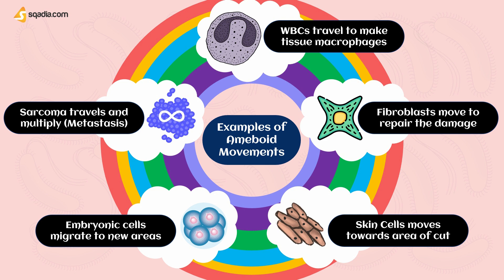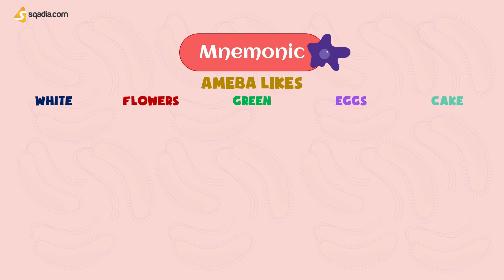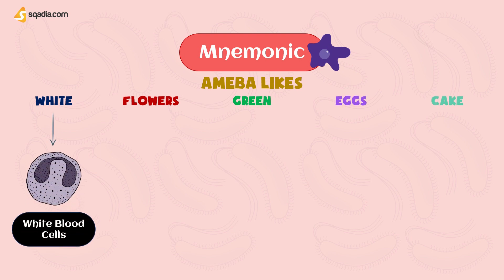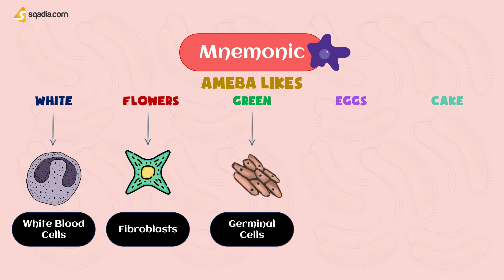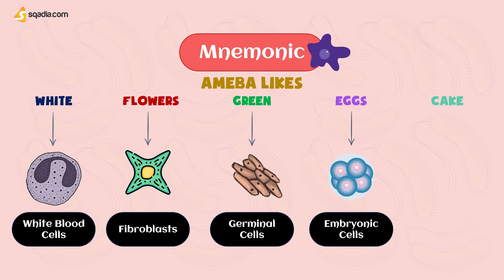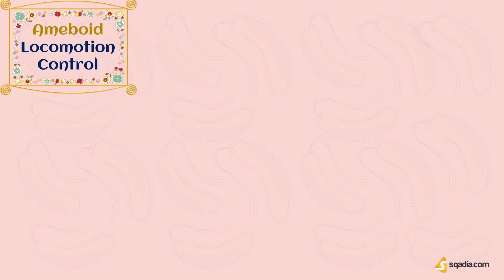Rapid multiplication of cells occurs, called metastasis. You can remember these cells with an easy mnemonic: the amoeba likes white flowers and green eggs cake. White means white blood cells. Flowers mean fibroblasts. Green means germinal cells. Eggs mean embryo. Cake means cancer cells.